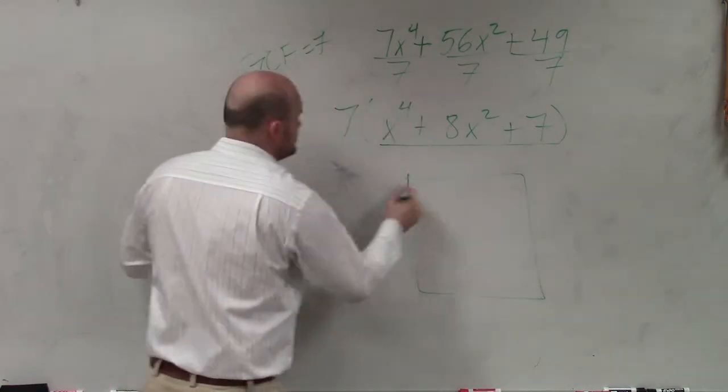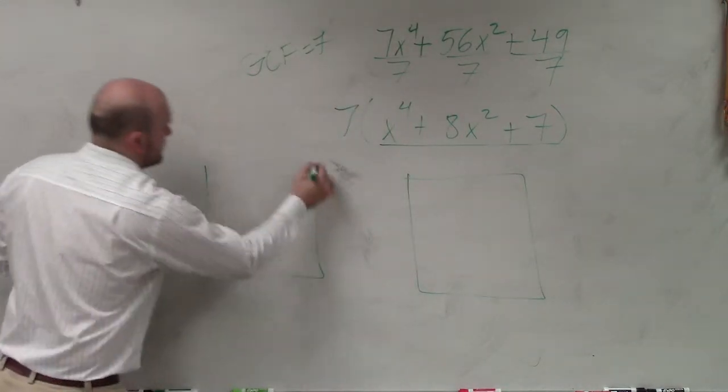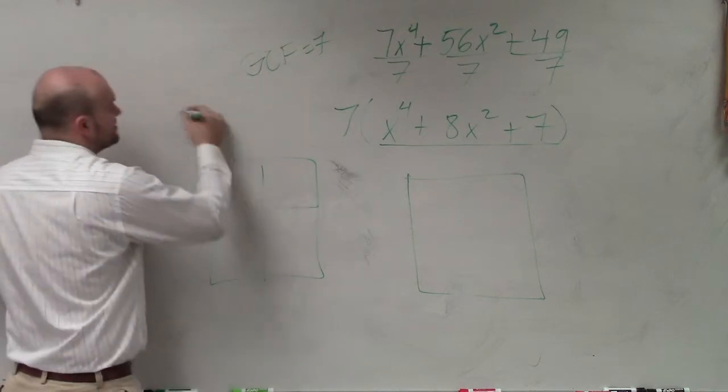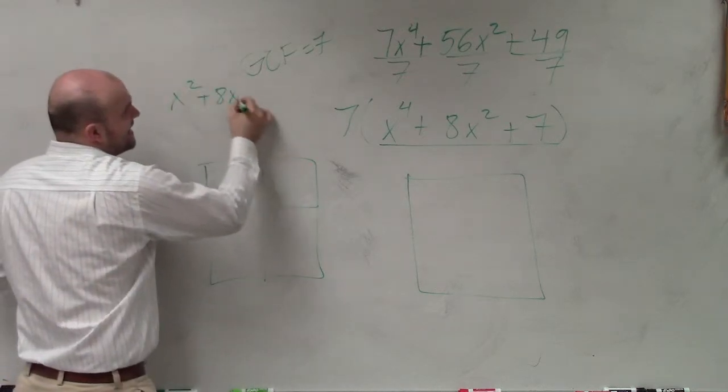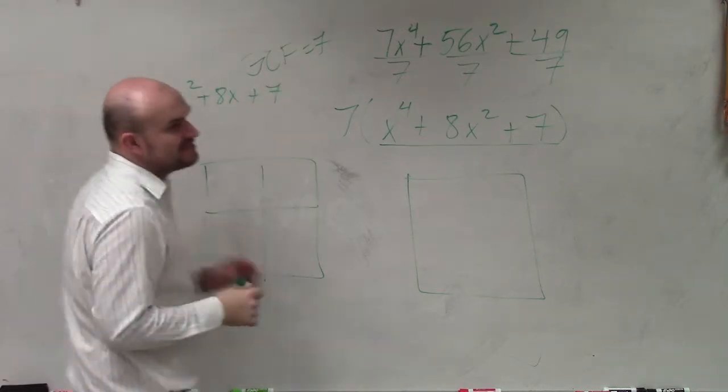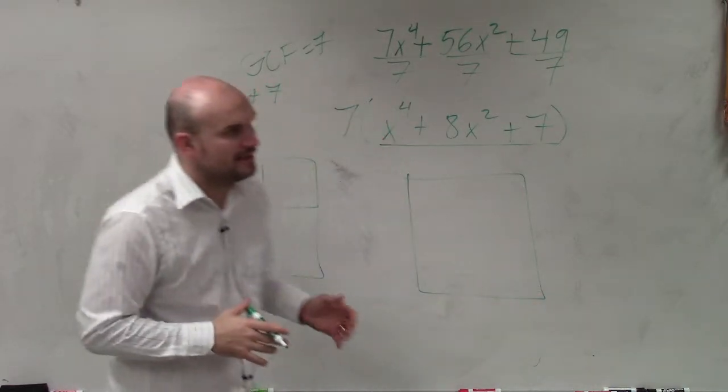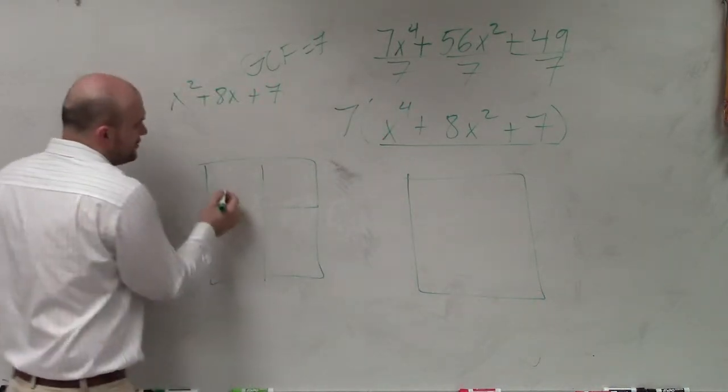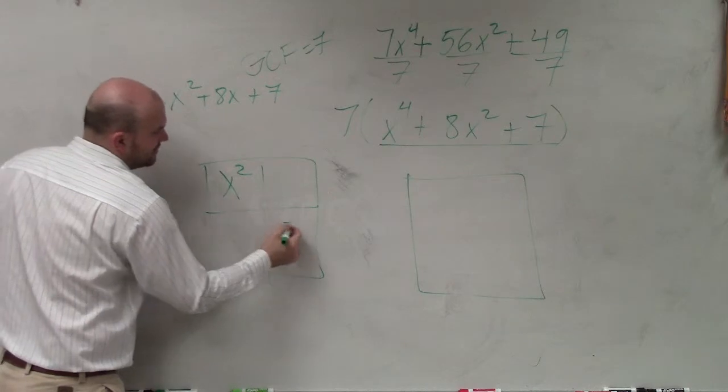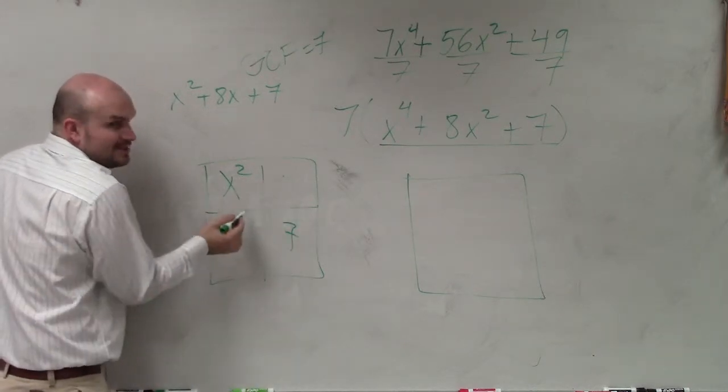If this was an example of x squared, OK, then you guys would have x squared, and then you'd have 7. And then we'd have to determine what these two are, right?